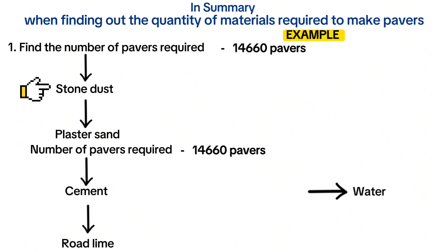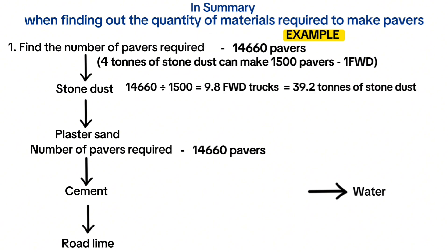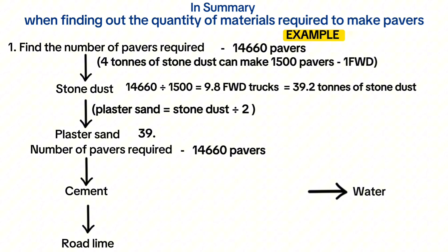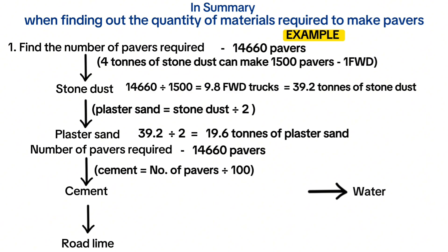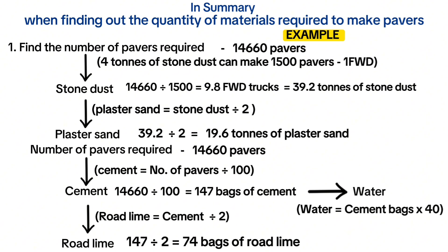For 14,660 pavers: stone dust — 14,660 divided by 1,500 gives 9.8 forward trucks, multiplied by 4 tons equals 39.2 tons. Plaster sand — stone dust divided by 2 gives 19.6 tons. Cement — pavers divided by 100 gives 147 bags. Road lime — cement divided by 2 gives 74 bags. Water — cement bags multiplied by 40 gives 5,880 liters of water.